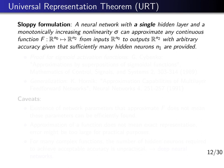In this lecture, we discuss the expressiveness of multilayer perceptrons. The key result is the Universal Representation Theorem, which tells us what kind of functions can be approximated with a multilayer perceptron. A neural network with a single hidden layer and a monotonically increasing non-linearity sigma can approximate any continuous function from inputs to outputs with arbitrary accuracy, assuming sufficiently many hidden neurons are provided.